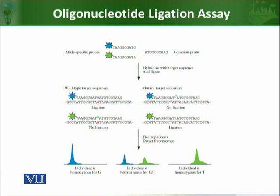In the second tube, if there is a mutation in the target sequence, the mutant target probe will bind. But if there is no mutation, the mutant probe will not perfectly bind at its target sequence. Since the common probe binds right next to it, the ligase will not be able to ligate the two probes. So if ligation works, it means both probes have bound perfectly; if there is no ligation, one of the probes has not bound at its target sequence.